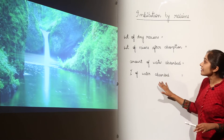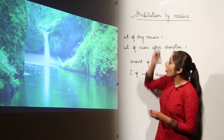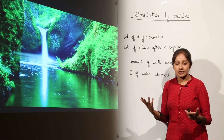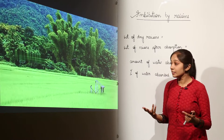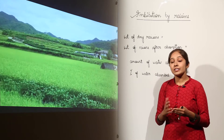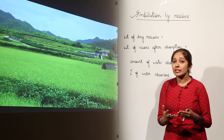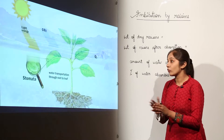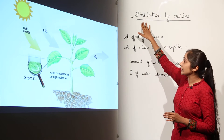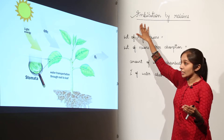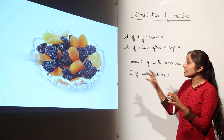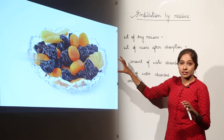Water is an important constituent for plants. Plants need water for various processes, and this absorption of water takes place by diffusion, osmosis, and many other processes. The imbibition process is especially necessary for seed germination — it is the absorption of water by solid substances.